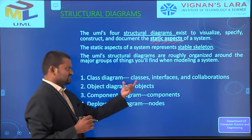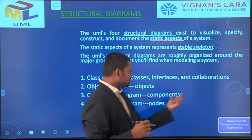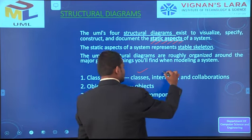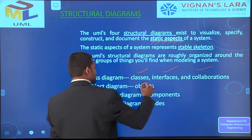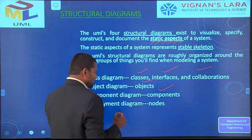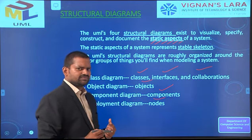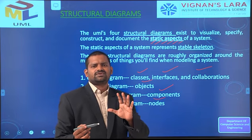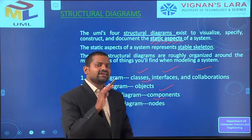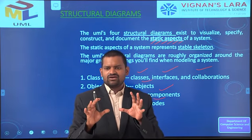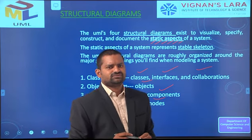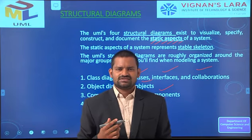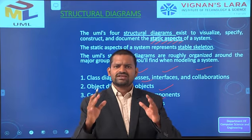Class diagram contains classes, interfaces, and collaborations. Object diagram contains objects. Component diagram contains components. Deployment diagram contains nodes. In our six-unit syllabus, we will learn all nine diagrams completely and draw all nine diagrams for a particular system. In our lab, there are 12 exercises, and for all 12 problems we must draw all nine diagrams.